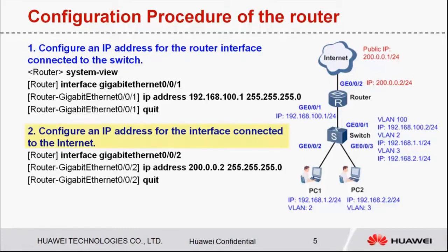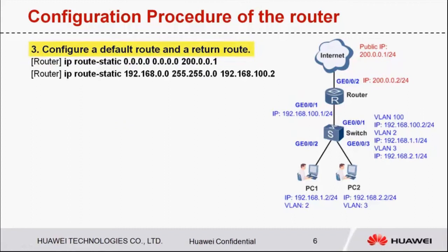Step 2: Configure an IP address for the interface connected to the internet. The configured IP address and the public IP address are in the same network segment. Step 3: Configure a default route and a return route. The next hop address of the default route is 200.0.0.1, a public IP address.